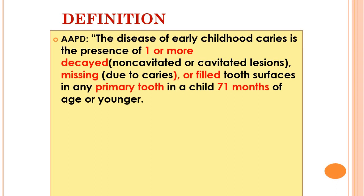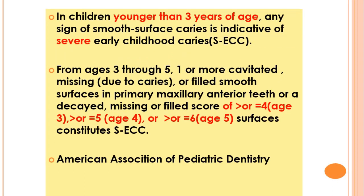The American Academy of Pediatric Dentistry has defined early childhood caries as the presence of one or more decayed, missing, or filled tooth surfaces in any primary tooth in a child 71 months of age or younger — that is, less than six years old. Decayed, missing, or filled surfaces can be non-cavitated or cavitated.